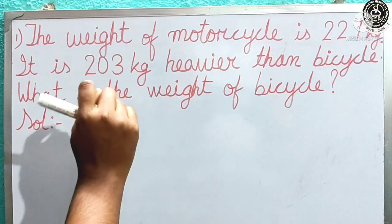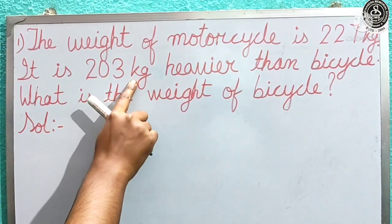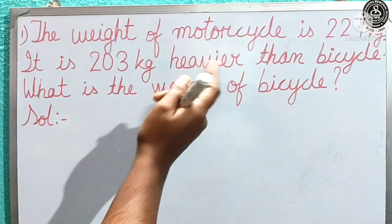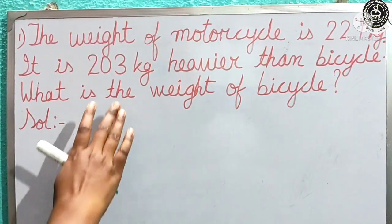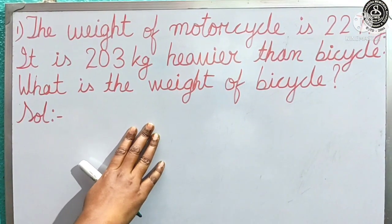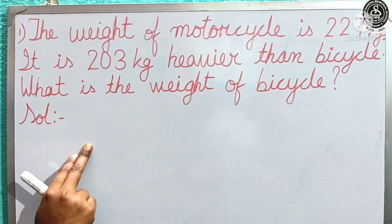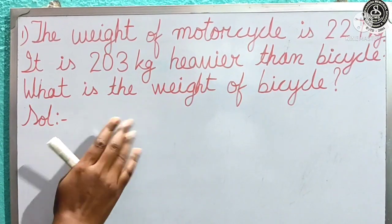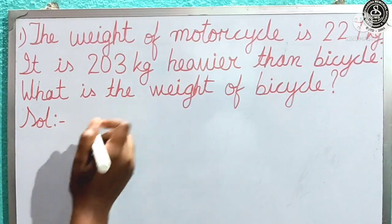If you are confused, you can also see the unit — it is given in kilograms. We have also learned the unit grams. So if we see the unit, we can understand that this type of word problem is based on weight. How to write the statement for a word problem based on weight? We will write: weight of motorcycle.